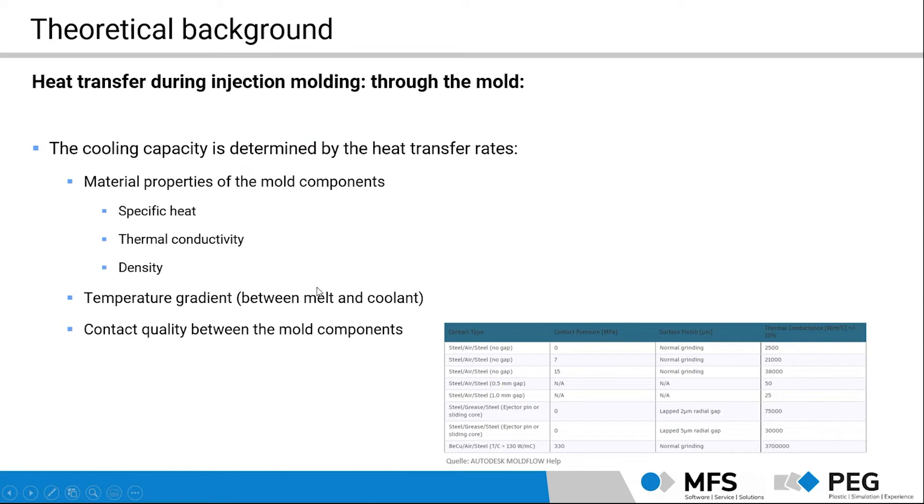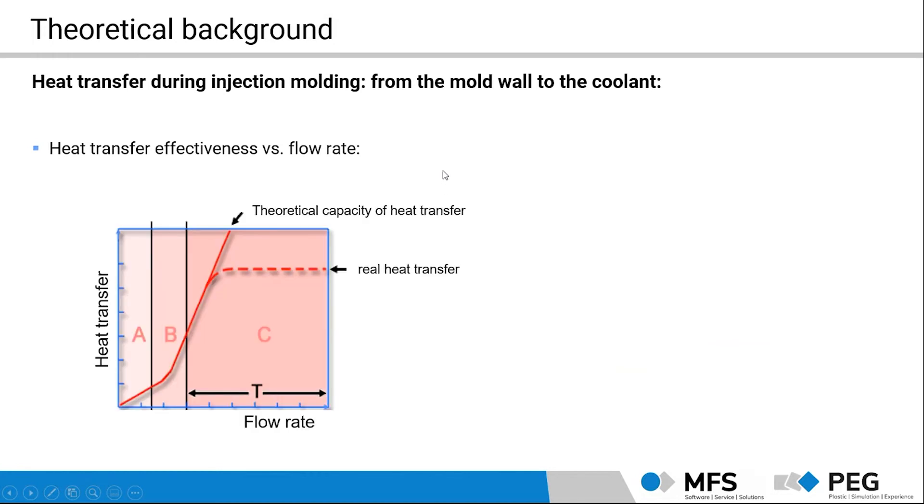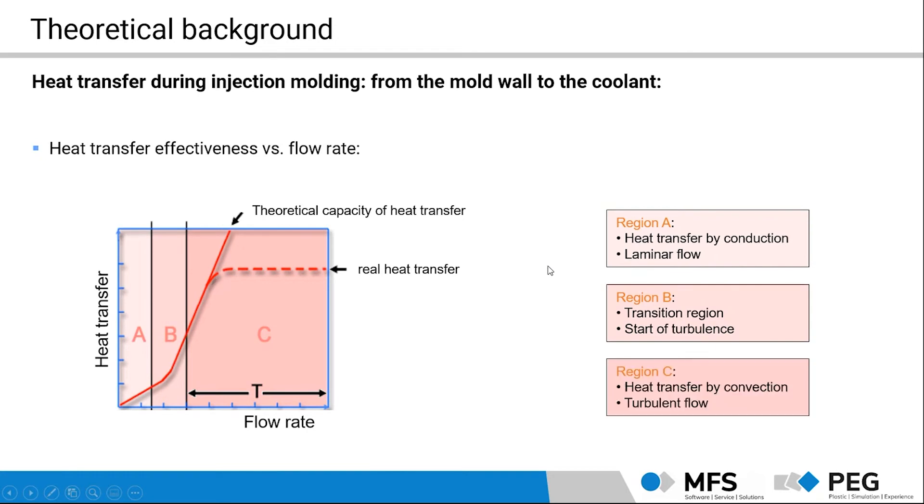And also one of the main points is the heat transfer from the mold wall to the coolant. And here we are talking about Reynolds numbers. I think every one of you heard about that. What does that mean and how can we affect the Reynolds number? And therefore the flow rate of the heat. And we will talk about the capacity which is theoretically possible. How fast we can transfer the heat through the mold and to the water. But also we will see that in reality it is limited. We have an upper limit. That means we have different regions, different areas. And how they are affected in detail. And what does it mean for our process setup?